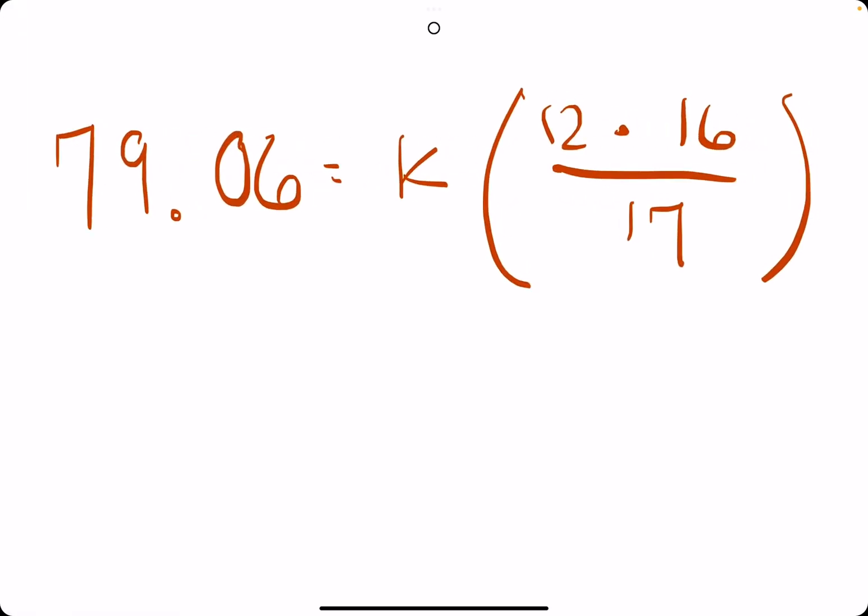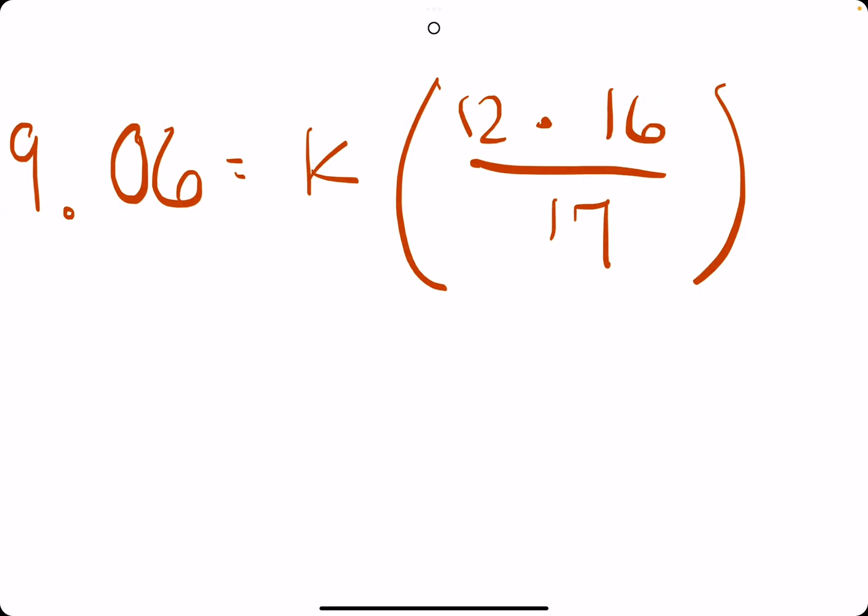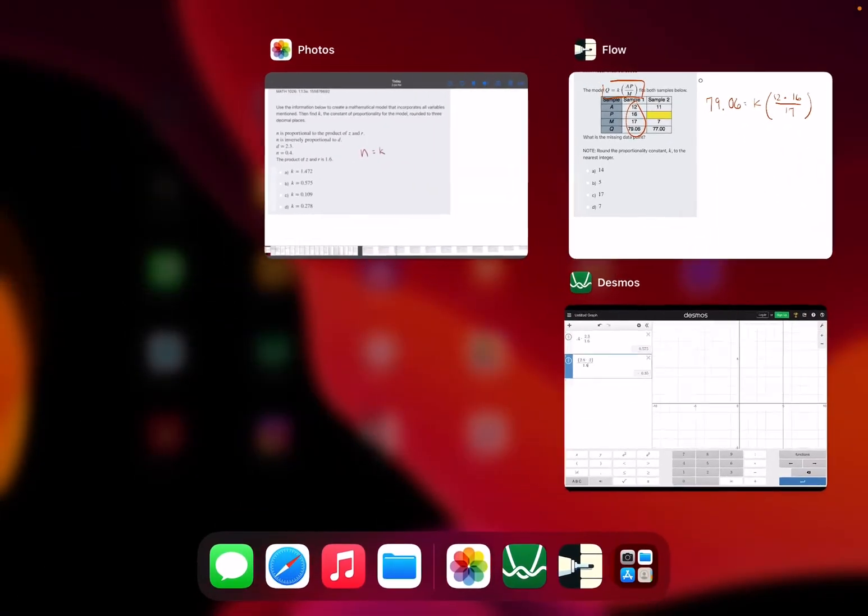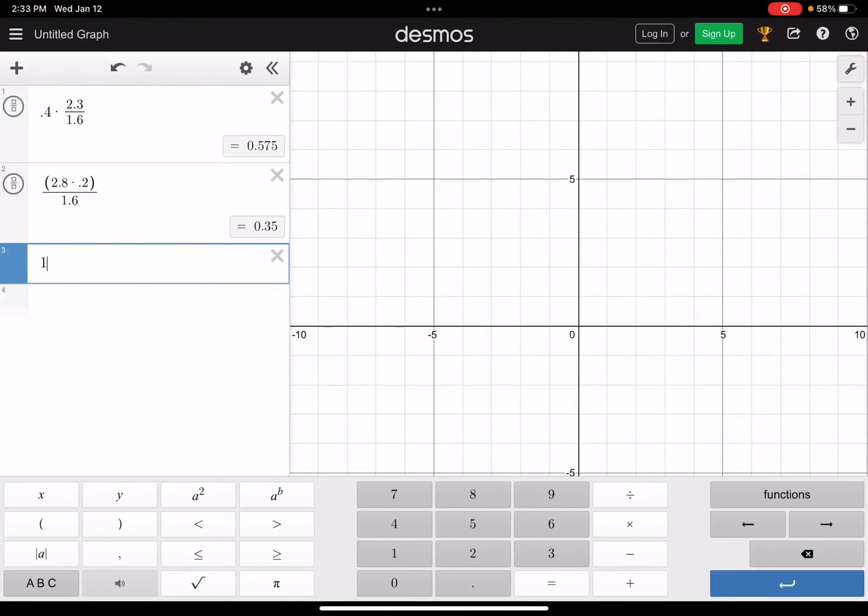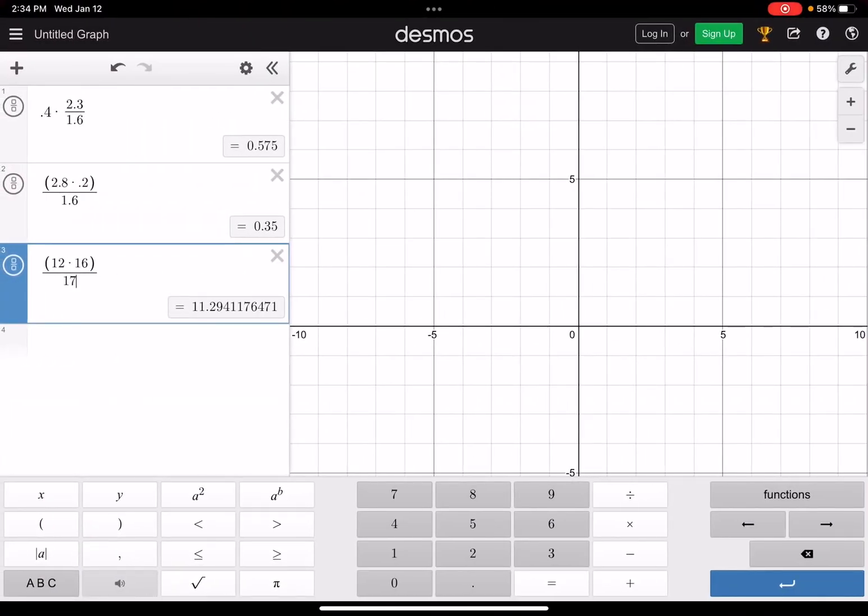The goal is to isolate K on the right side. It may be easier to go ahead and identify what is 12 times 16 divided by 17. 12 times 16 all divided by 17, and we get approximately 11.294.